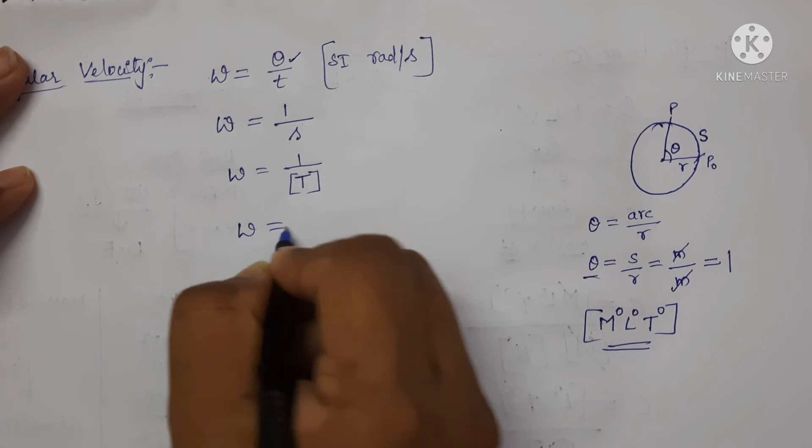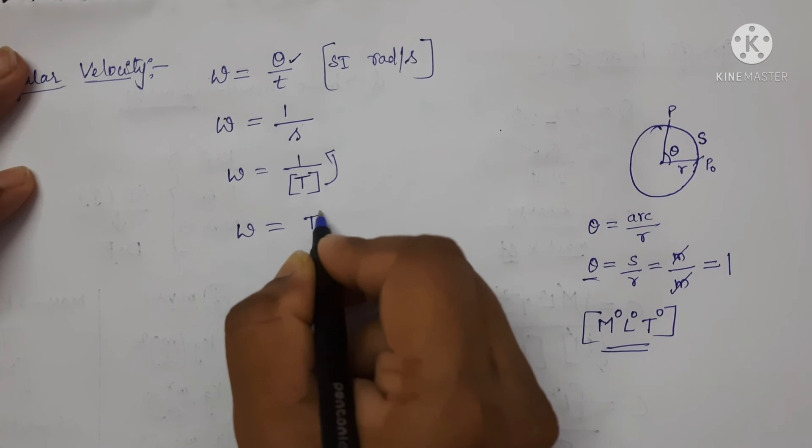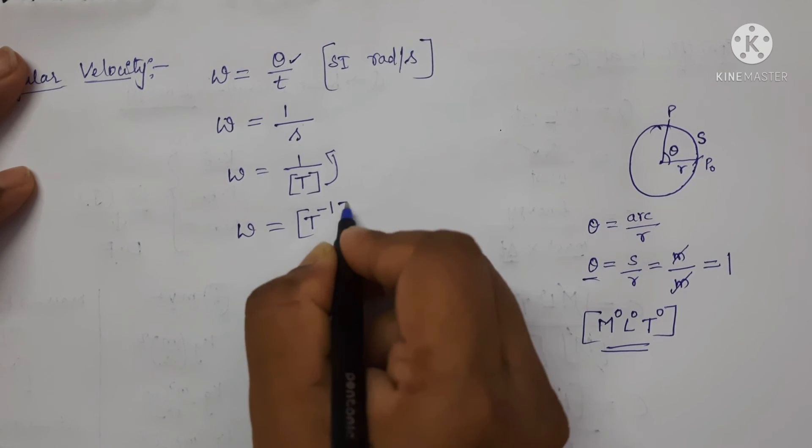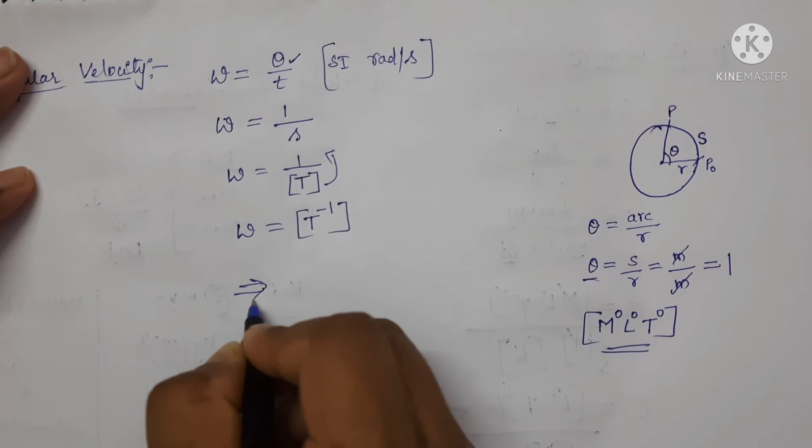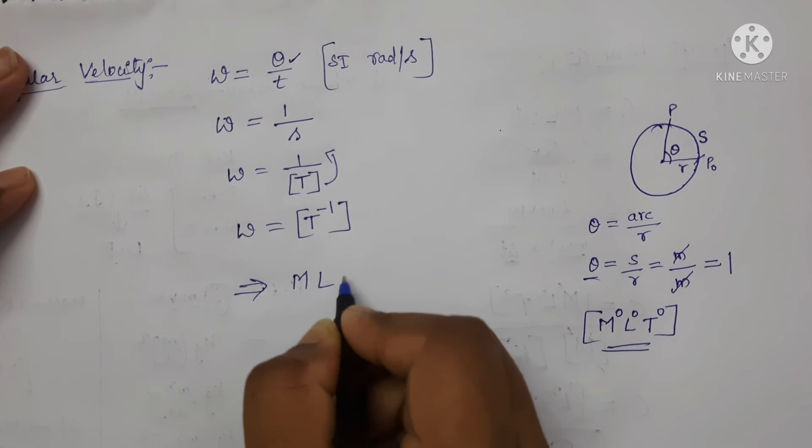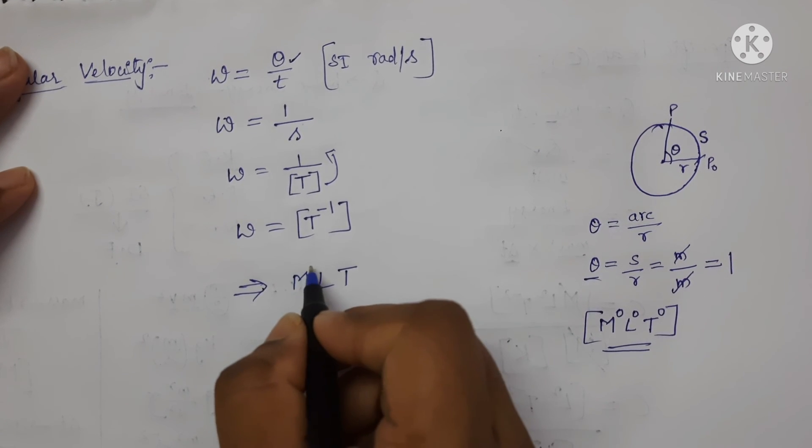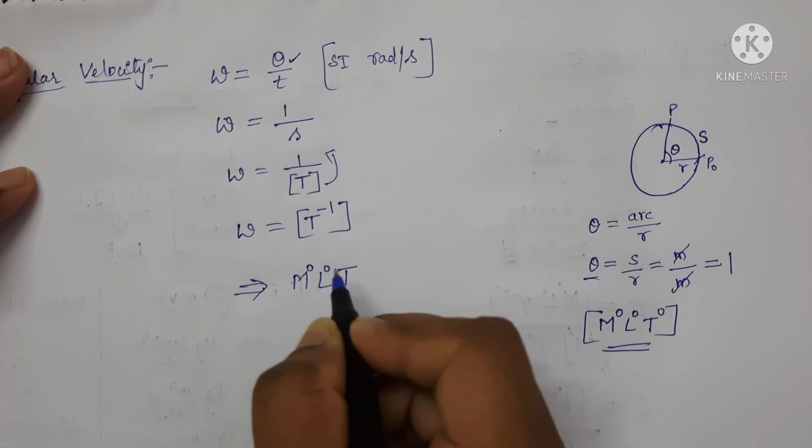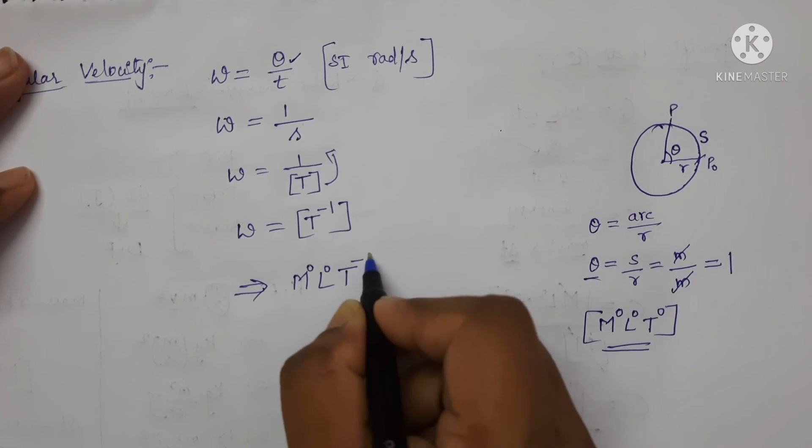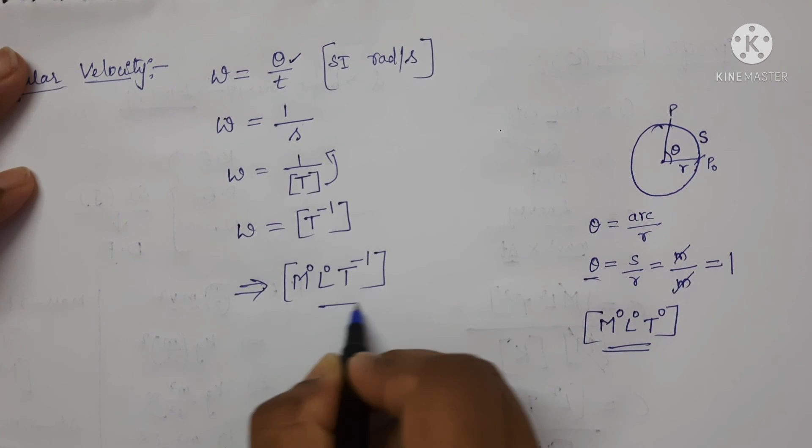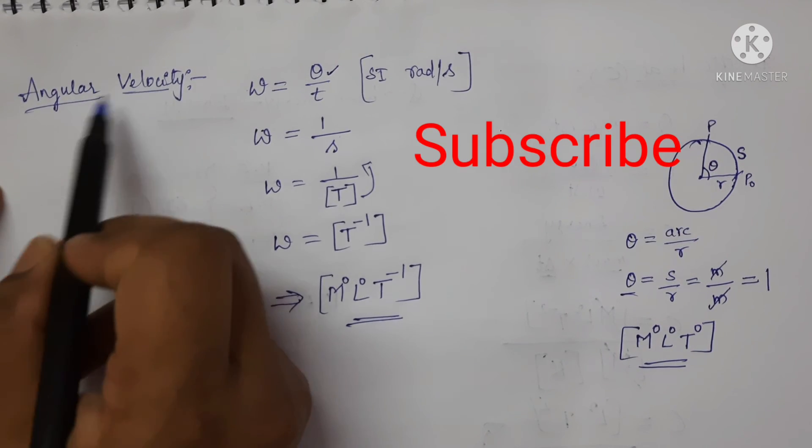Omega is equal to, now write T on the numerator, so which will be T power minus 1. Now, write the dimensional formula in the format of M, L, T. A mass term is absent, length term is absent, only time term is there, that is T power minus 1. This is the dimensional formula for angular velocity.